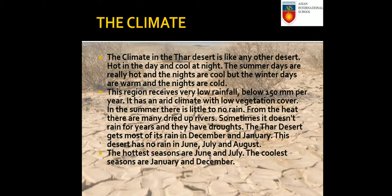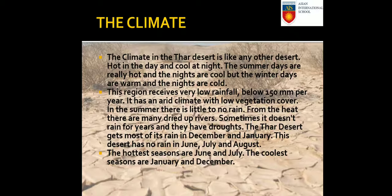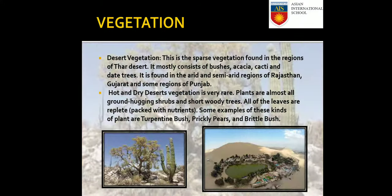The climate of the Thar Desert is hot in the day and cool at night. Summer days are very hot and nights are cool, while winter days are warm and nights are cold. This region receives very low rainfall — below 150 millimeters per year — and has an arid climate with low vegetation cover. There are many dried-up rivers, and sometimes it doesn't rain for years, causing droughts. Most rain falls in December and January; there is no rain in June, July, and August. The hottest months are June and July; the coolest are January and December.